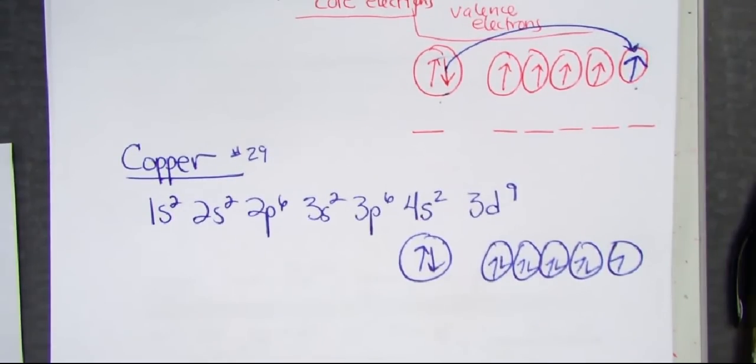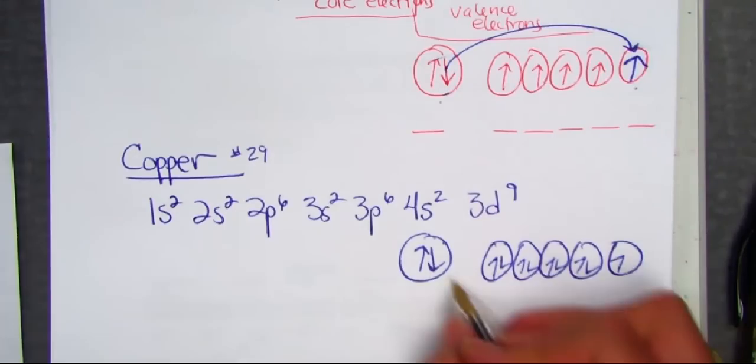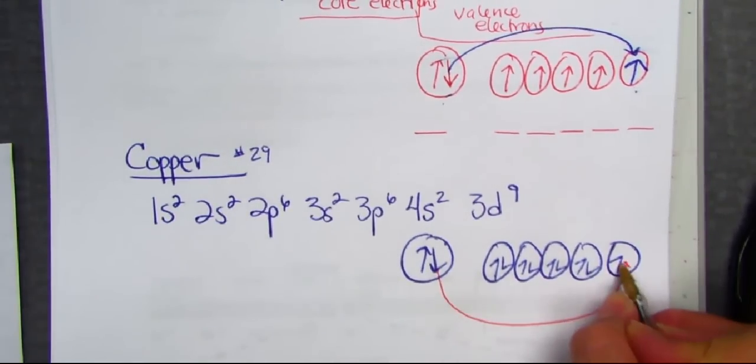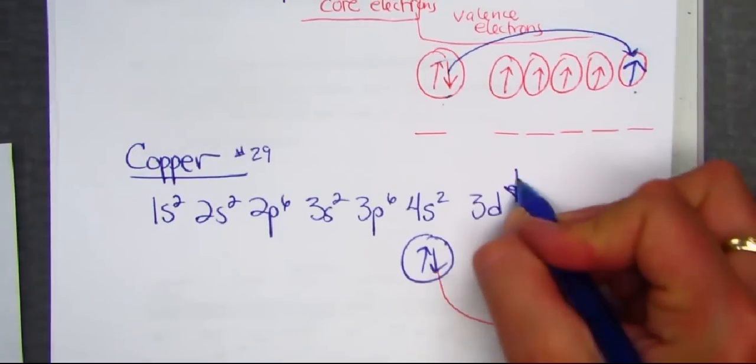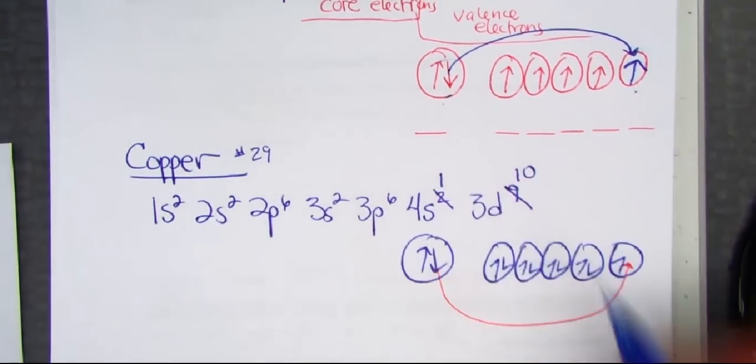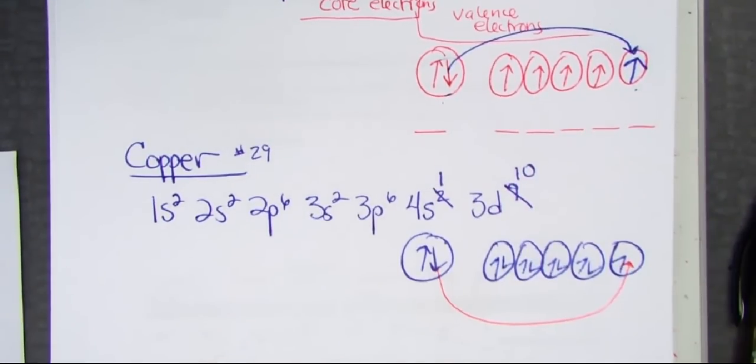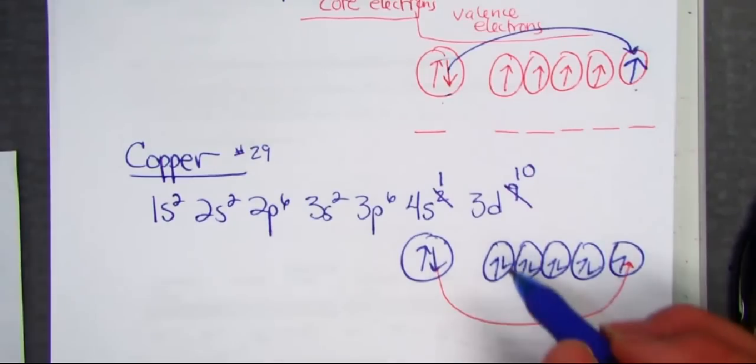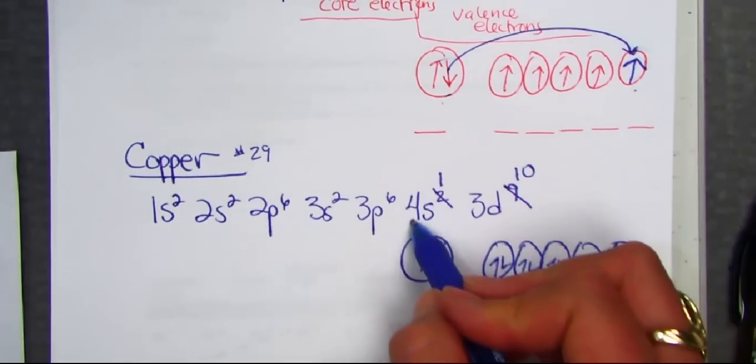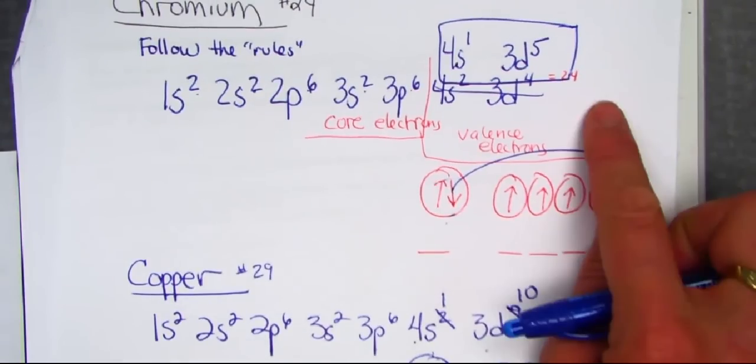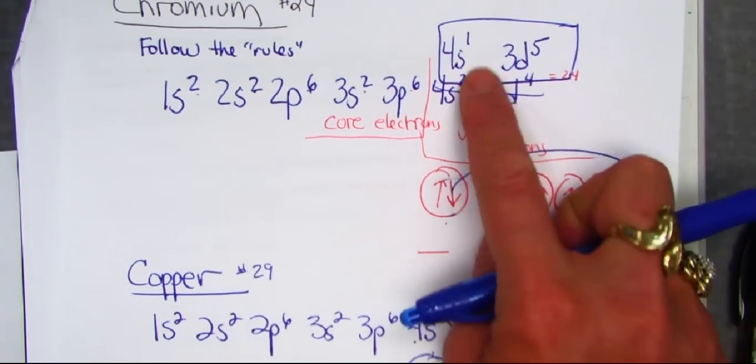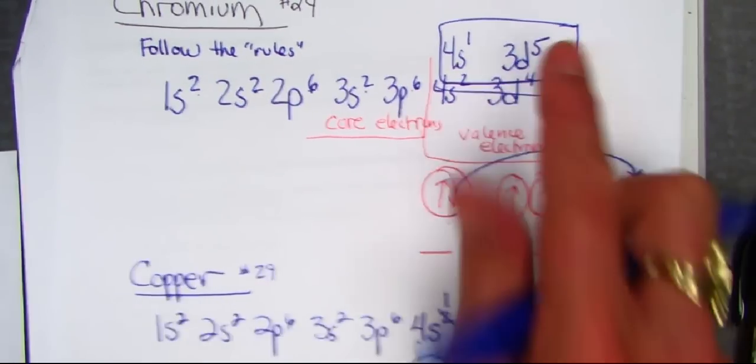But we're being told in its exceptional configuration, it also promotes one of its electrons to complete the D orbital. Fill all of those up, leaving just one in the 4S energy level. The correct configuration for copper would be 4S1, 3D10. The correct configuration for chromium, 4S1, 3D5.